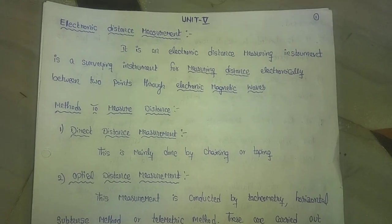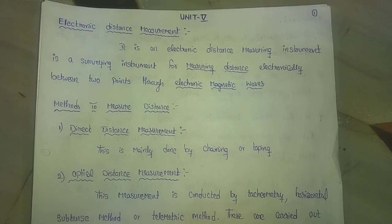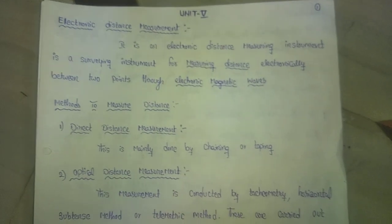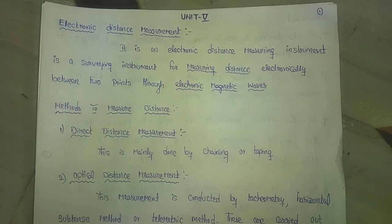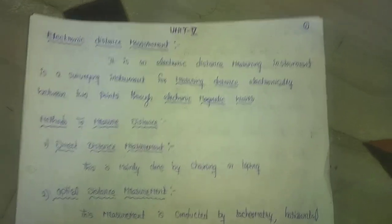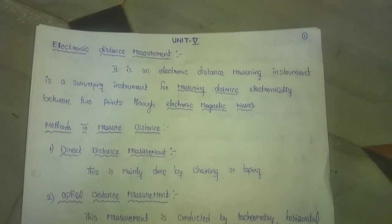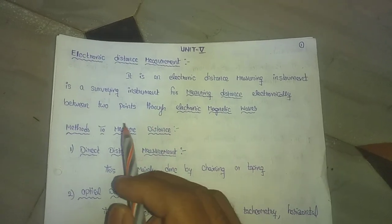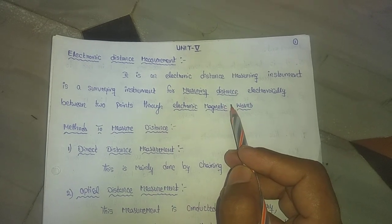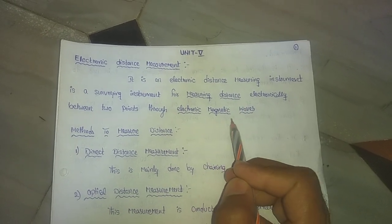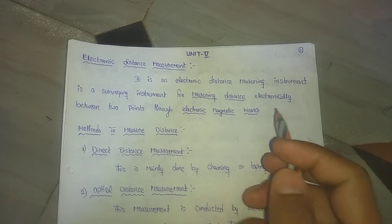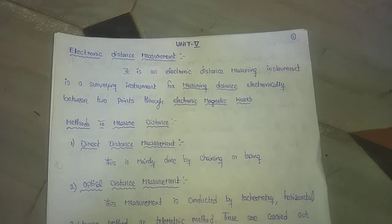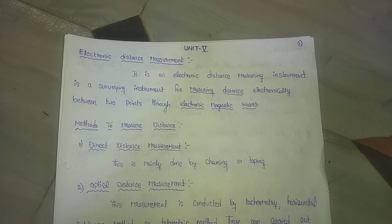Good morning students. Today I am going to start unit five - Electronic Distance Measurement. EDM, short for Electronic Distance Measurement, is a surveying instrument for measuring distance electronically between two points through electromagnetic waves. It is an advanced surveying instrument used to measure distance through electromagnetic waves.